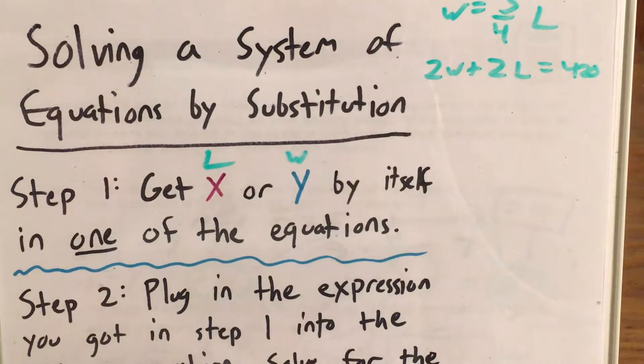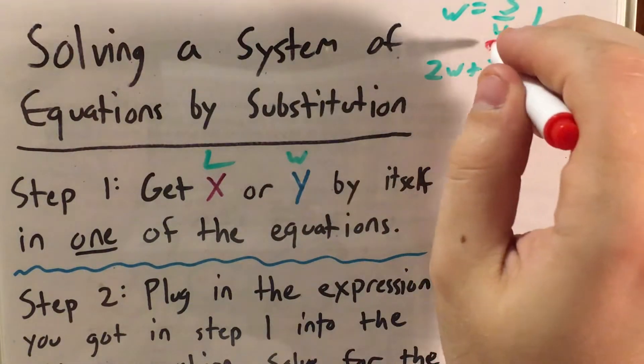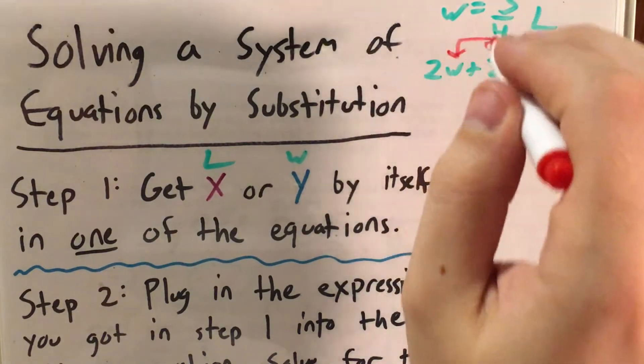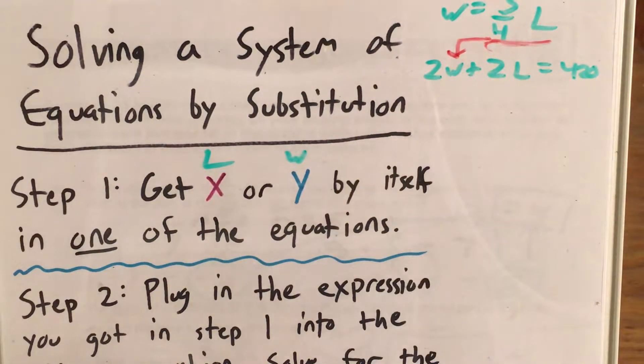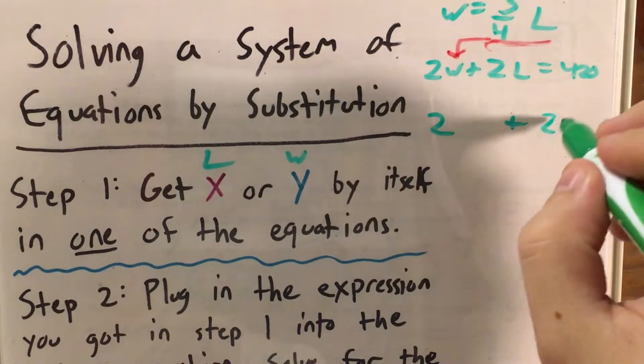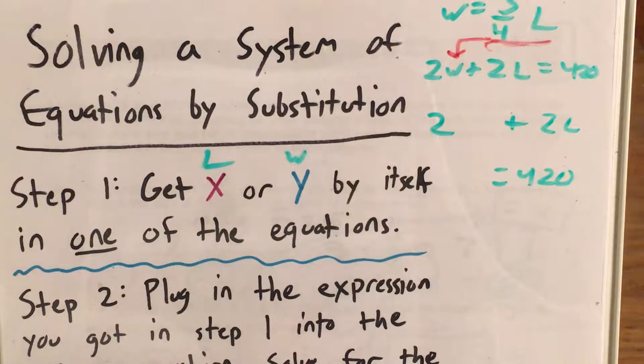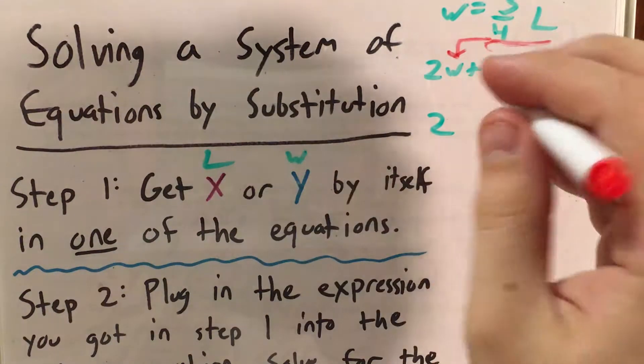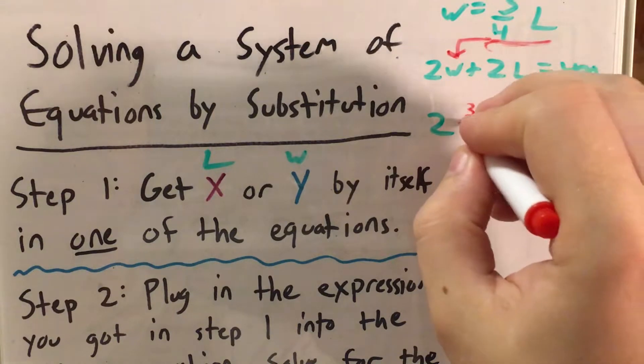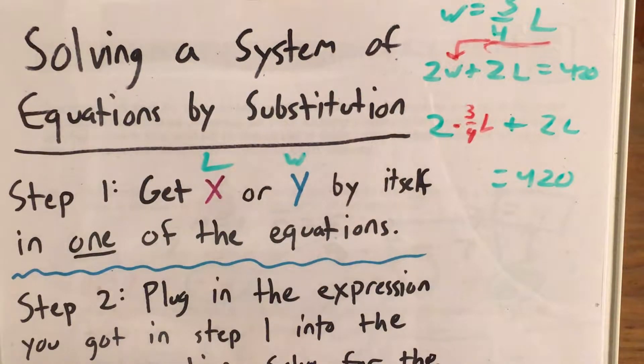So my next step is going to be to take this expression, this three-fourths of the length that I got for width, and actually plug that in for width in this other equation. So now, I'll write this other equation like it was, but instead of width now, I'm putting in times three-fourths of the length.